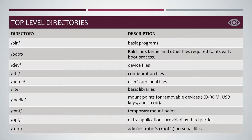Top-level directories. Here's the list of directories and descriptions. Bin — for basic programs. Boot — Kali Linux kernel and other files required for its early boot process. Dev — device files. ETC — configuration files. All kinds of configuration files will be stored in this ETC directory.